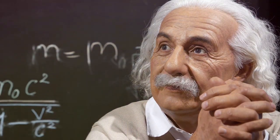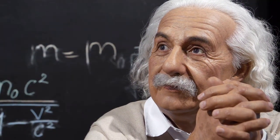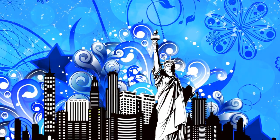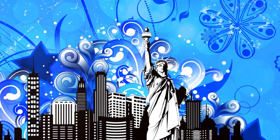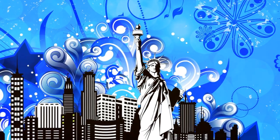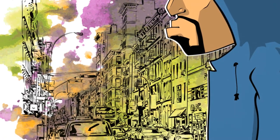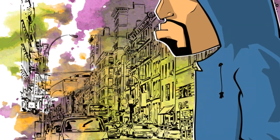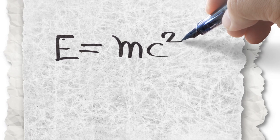Let's dive into the world of Einstein's magical equation E equals MC squared. Imagine a world filled with animated characters where E is energy — a lively, buzzing lightning bolt — M is mass — a solid, sturdy rock — and C is the speed of light, a swift, zipping comet.